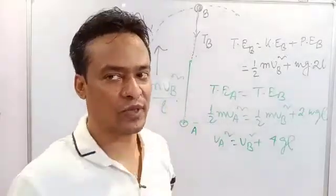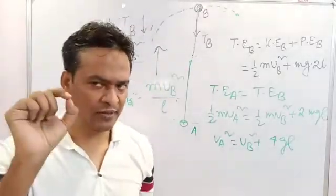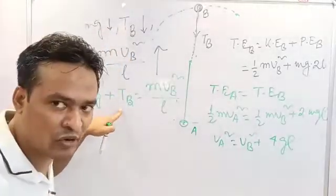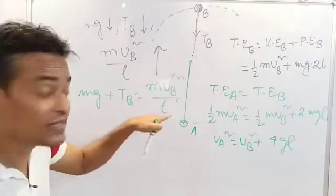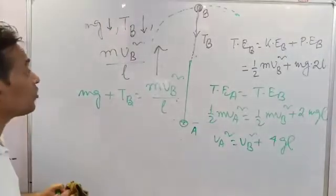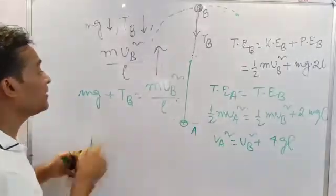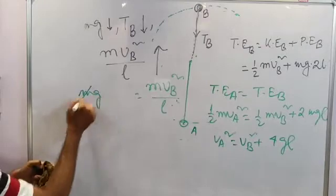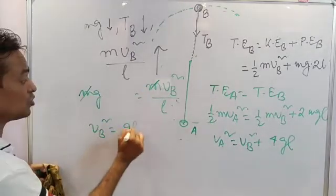I will show you a general expression and a special condition. What is the tension at the topmost point? For the minimum velocity condition, the tension at the topmost point is zero — T_top equals zero. Because I have minimum velocity — I will just complete it in a single circle. So canceling out, v_top squared equals gL.